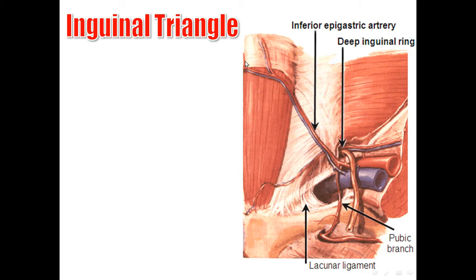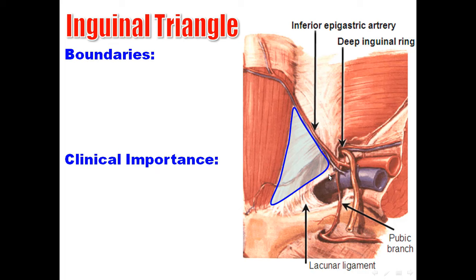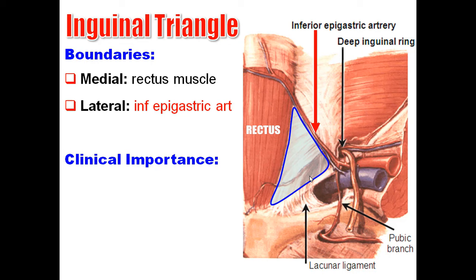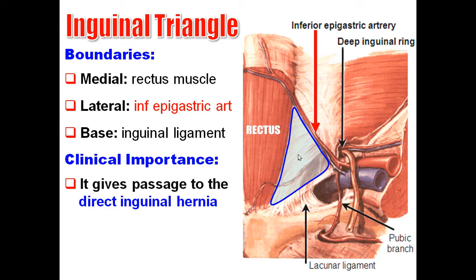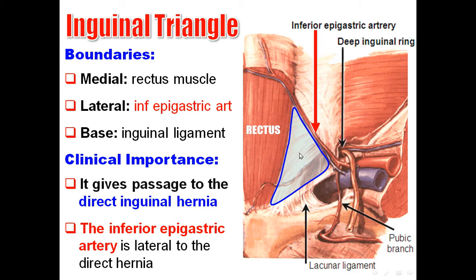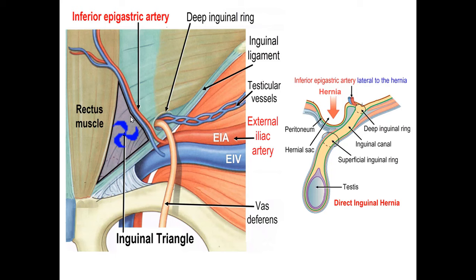There is another triangle called the inguinal triangle, bounded medially by the rectus abdominis muscle, laterally by the inferior epigastric artery, and the base is the inguinal ligament. This triangle is clinically important because it gives passage to the direct inguinal hernia. The direct inguinal hernia passes through this triangle and is medial to the inferior epigastric artery.